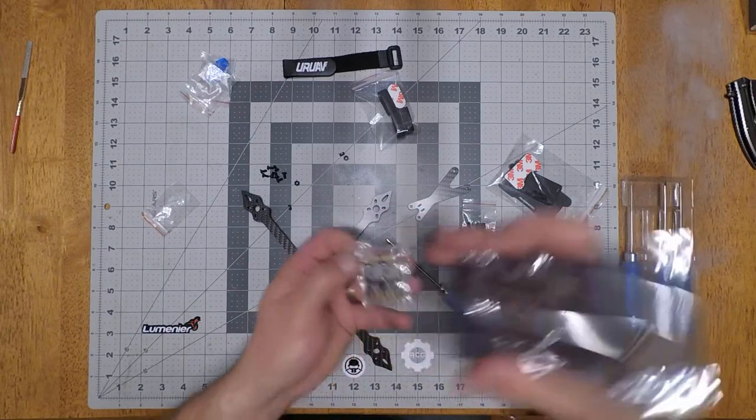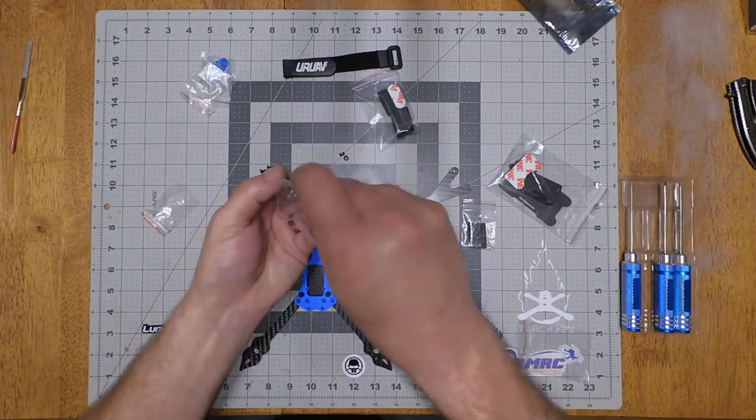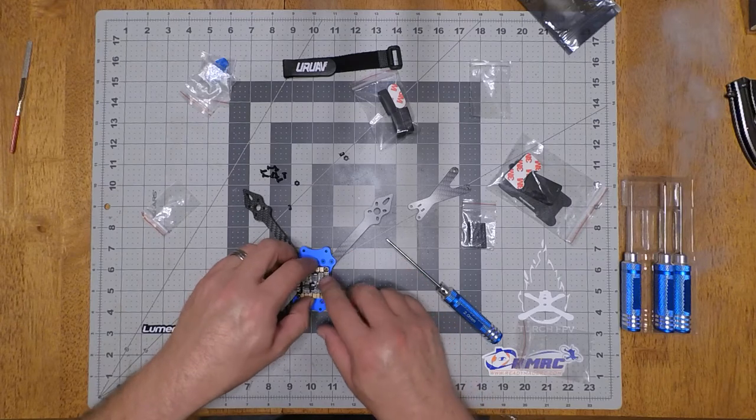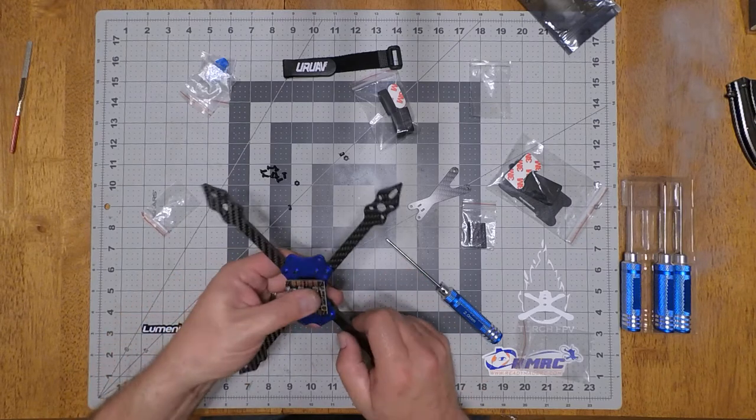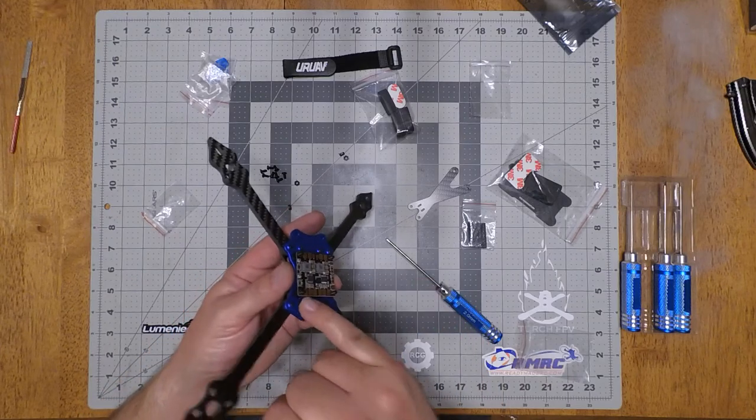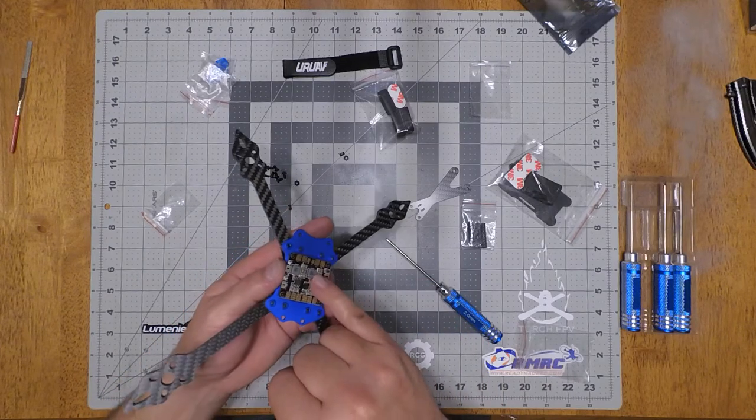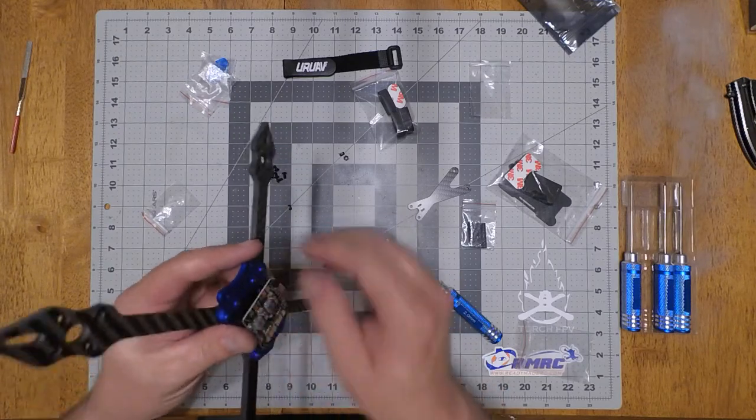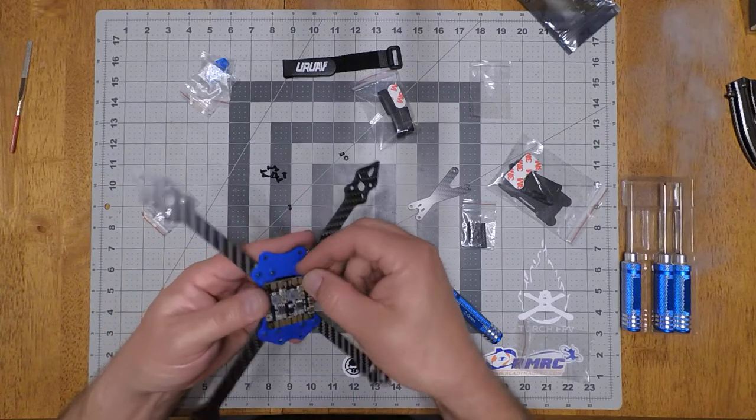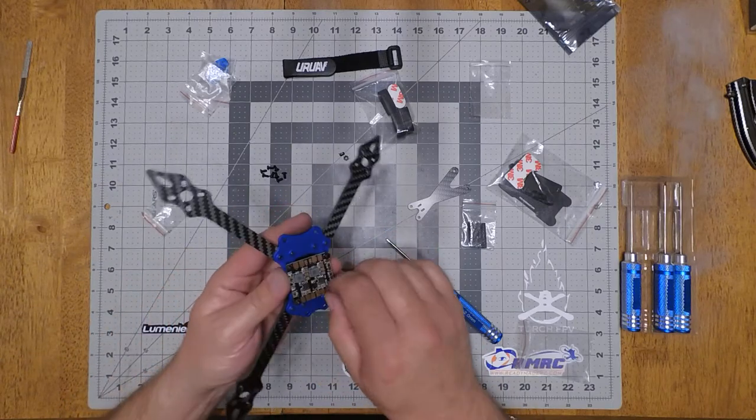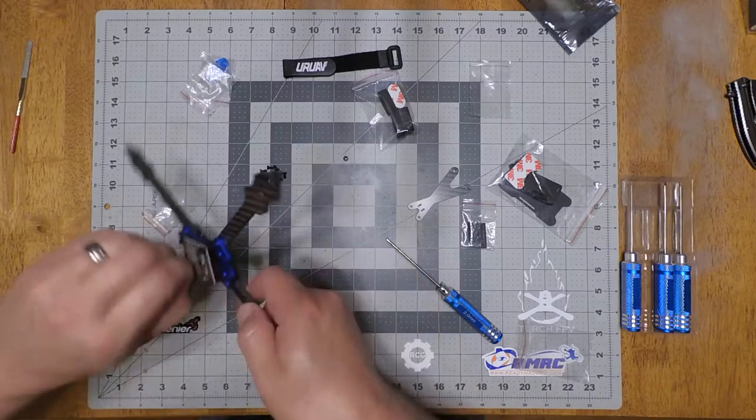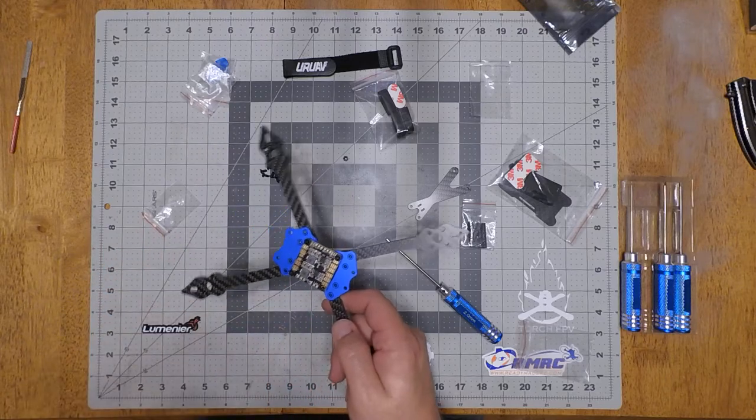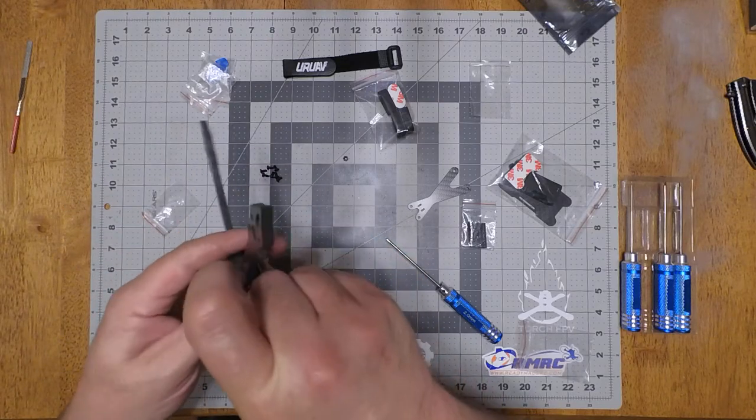I don't normally use the PDB when I'm building builds like this anyways. Because I'll just in my stack I'll use anti-vibration standoffs, 4-in-1 ESC because the arms are so skinny I'd rather use a 4-in-1, and then the flight controller. I'll just do this for because this is what they provide. I'm getting to have a pretty big pile of these PDBs laying around that I don't really use. So the screws that come to go through this bottom plate, it doesn't leave very much room to thread into the standoff.